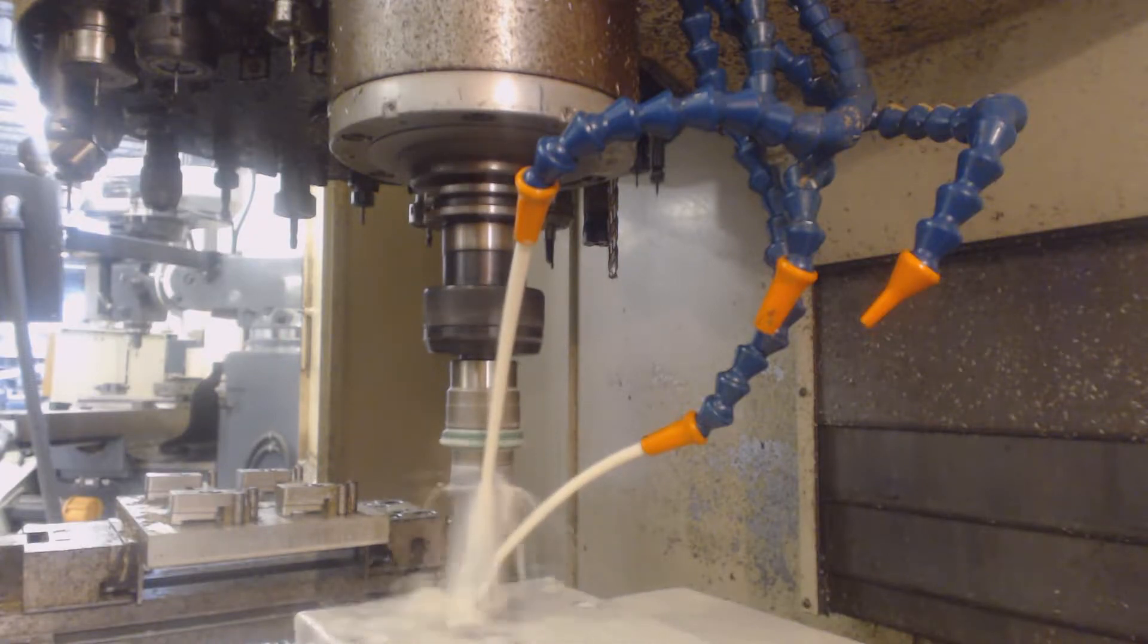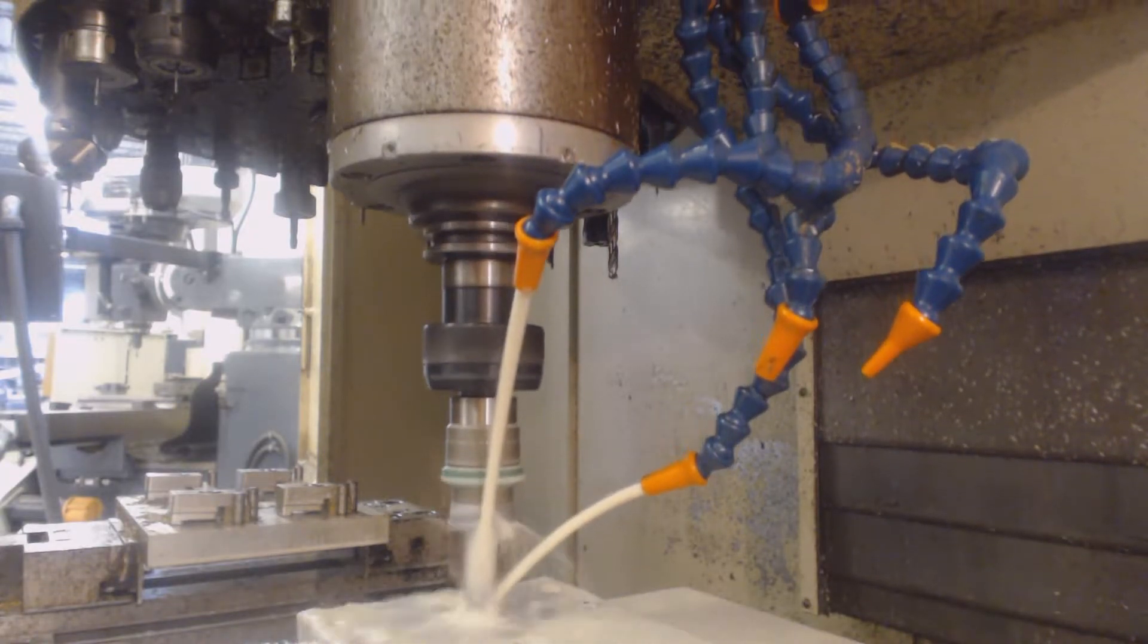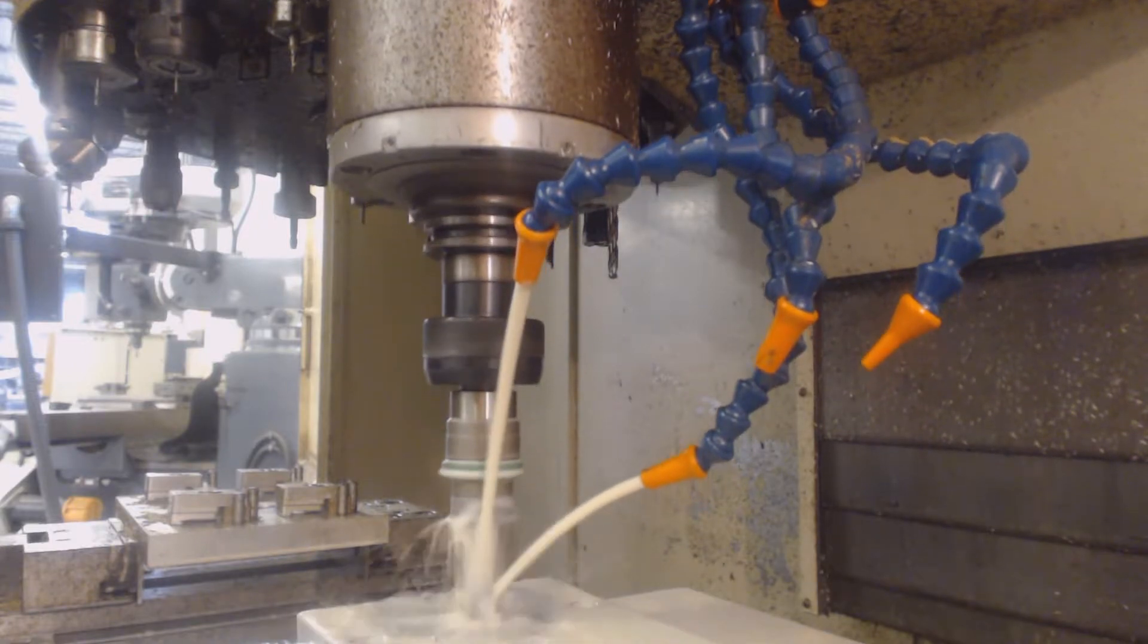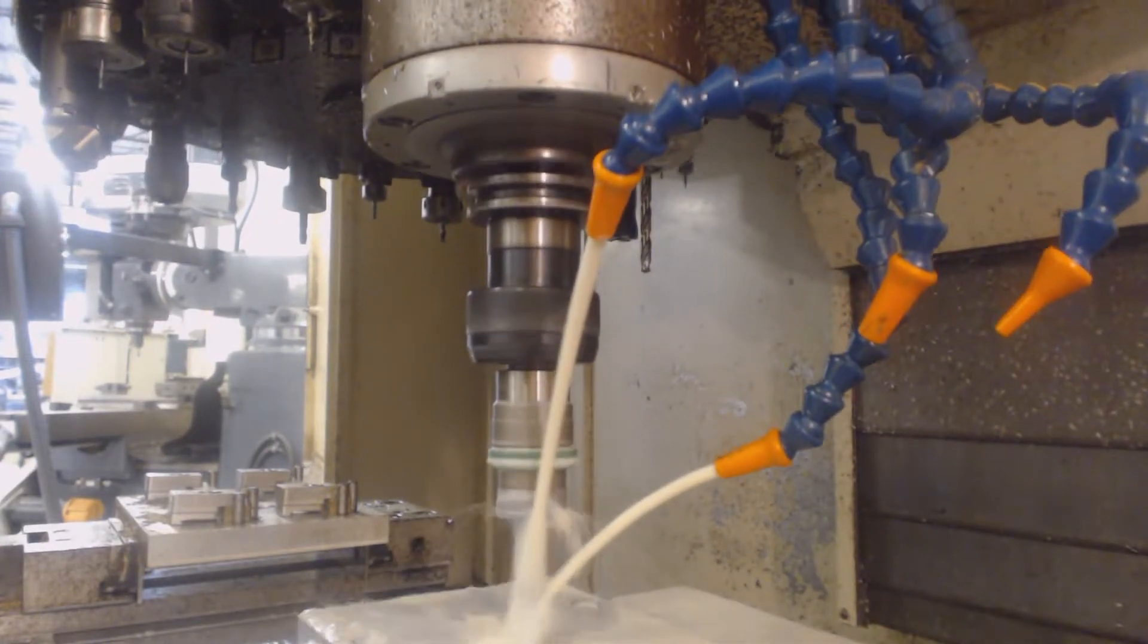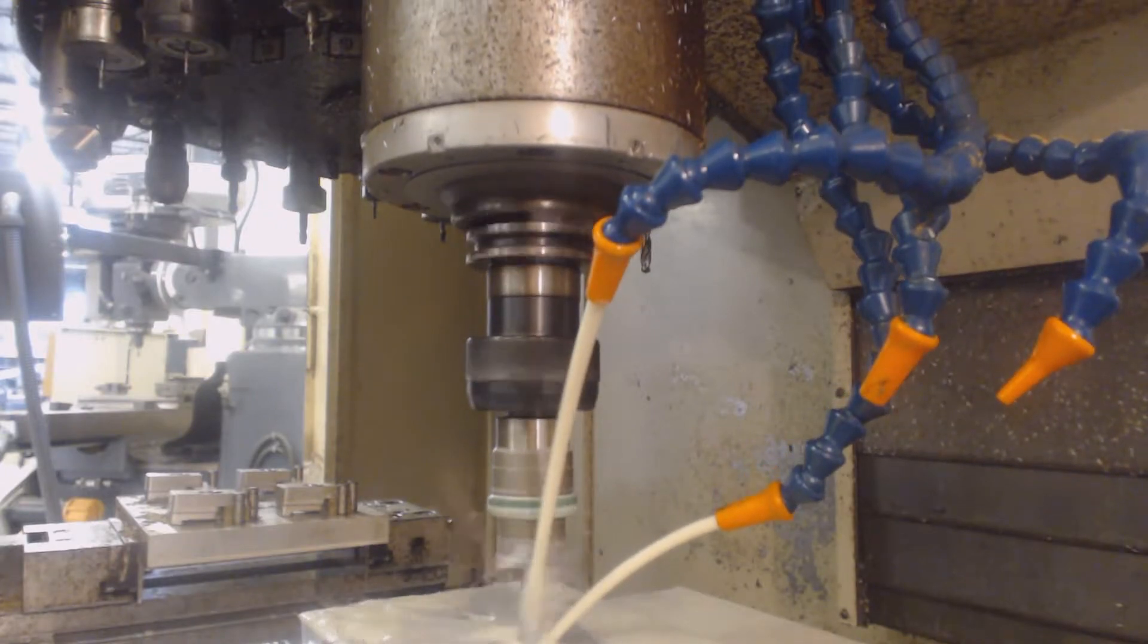When programming a tap, the spindle speed and feed must be synchronized or the thread will be stripped. Floating tapping holders as shown here are often used to help compensate for small errors in the synchronization.